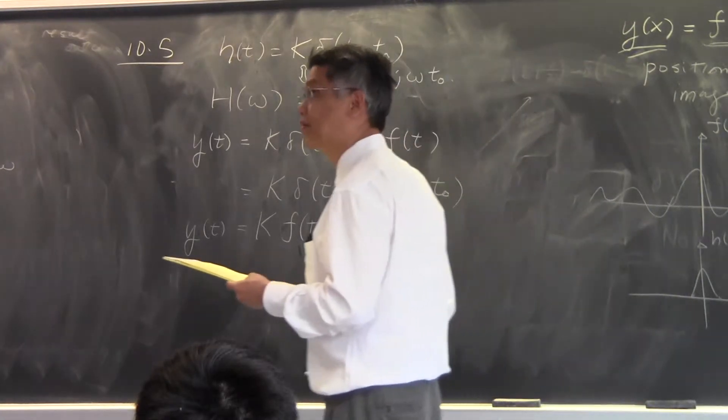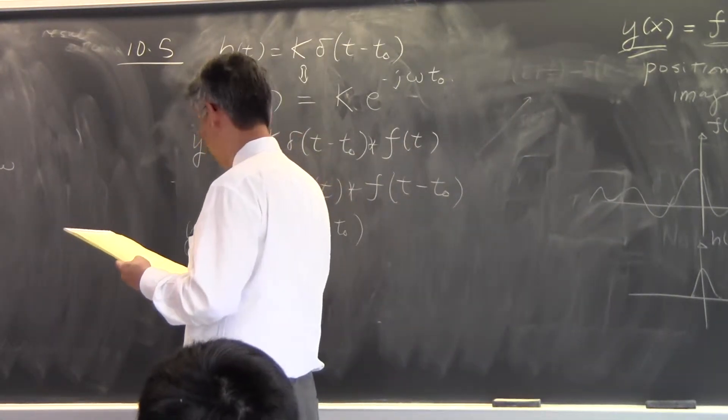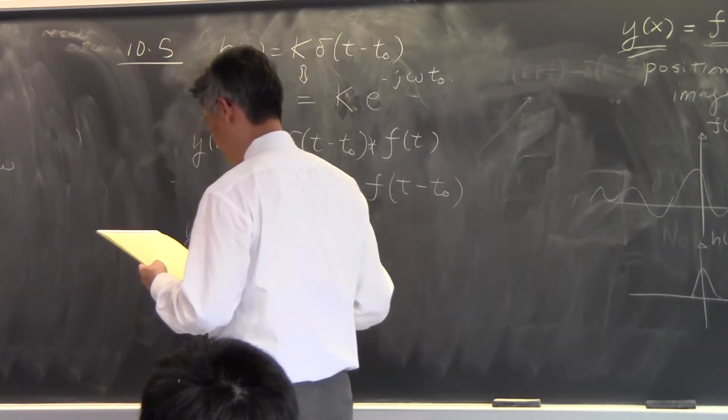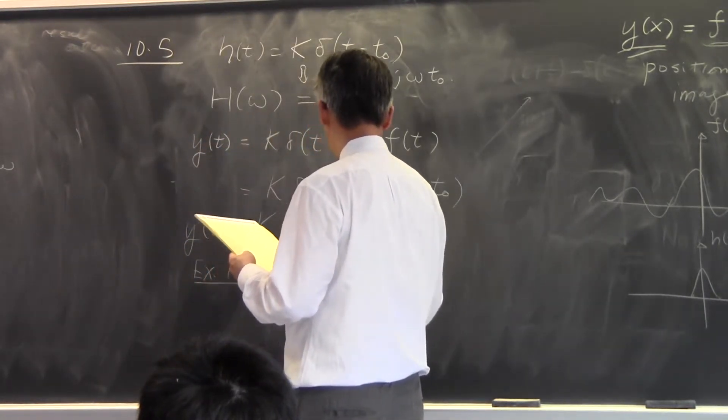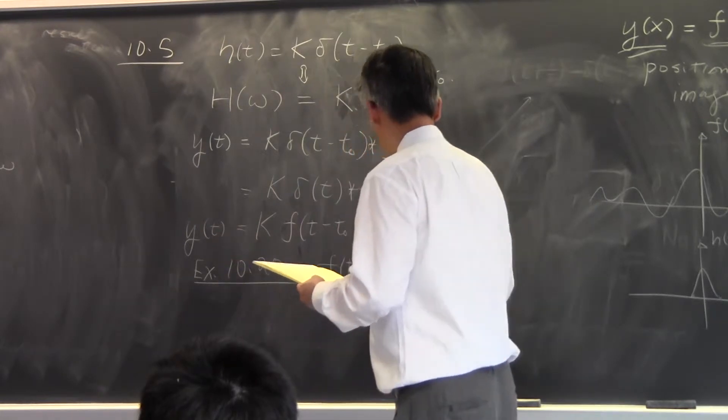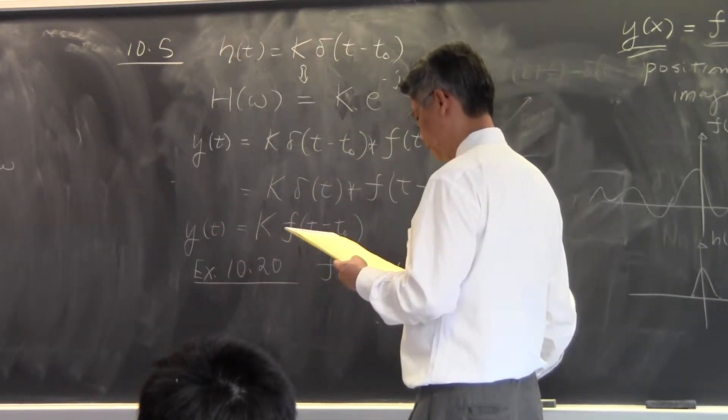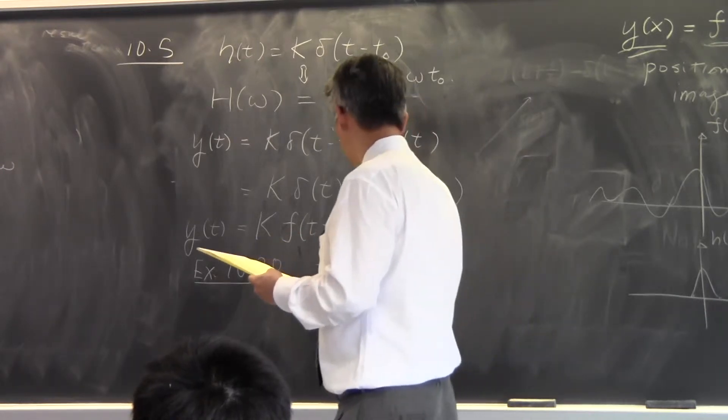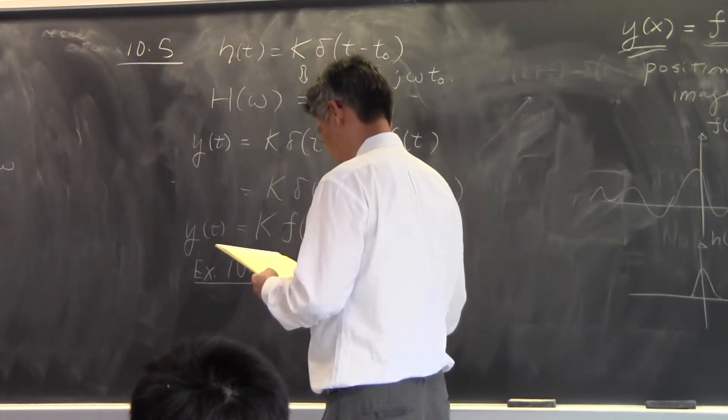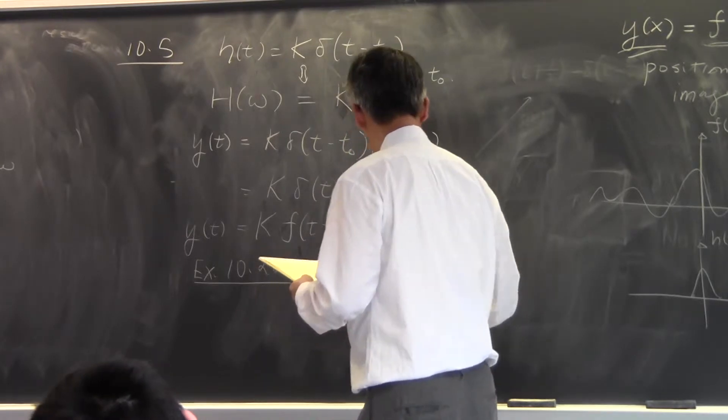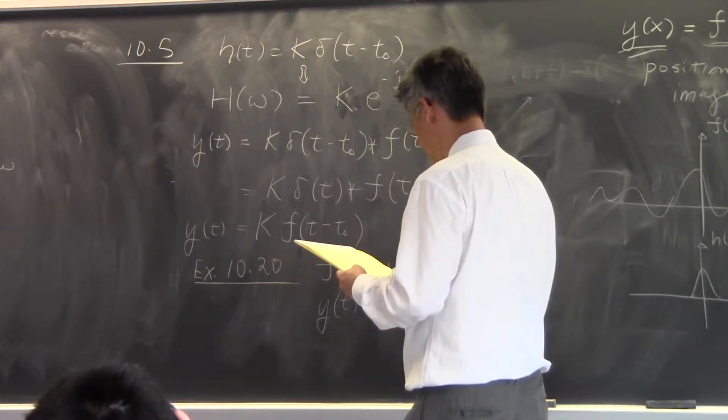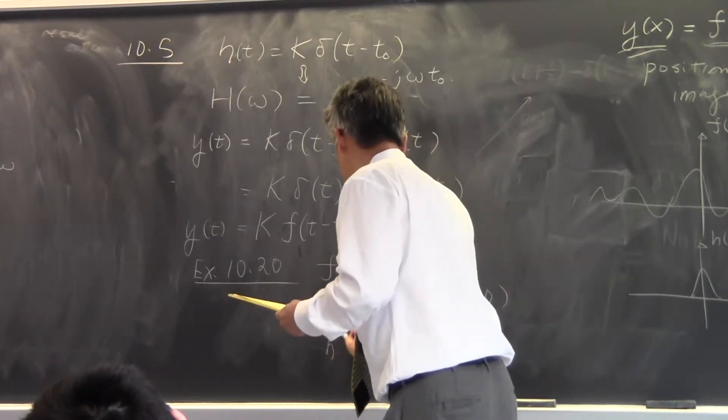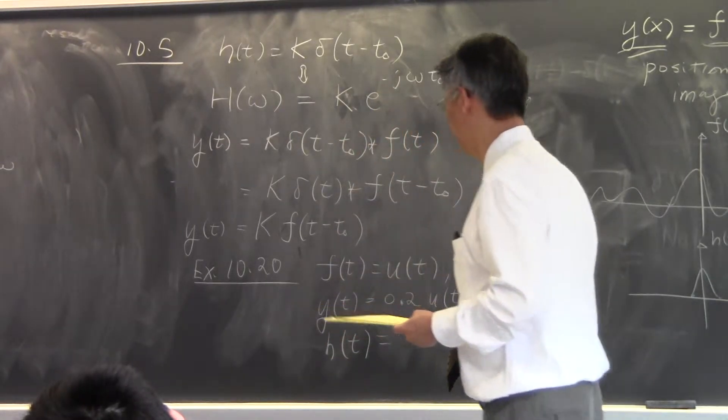So, the textbook gives a rather simple example. Example 10-20, you have input f of T is equal to u of T. Then, the output y of T is equal to 0.2 u of T minus 10, find h of T. What is h of T equal to?